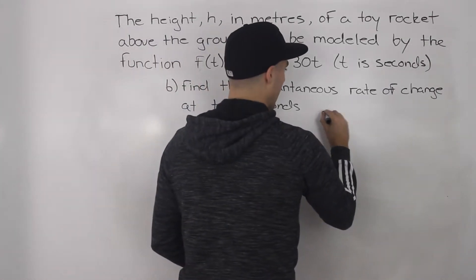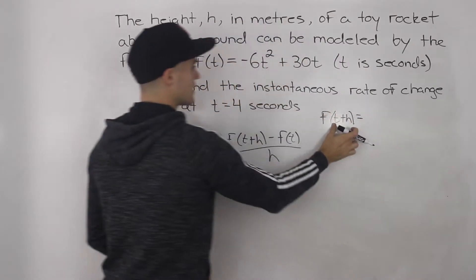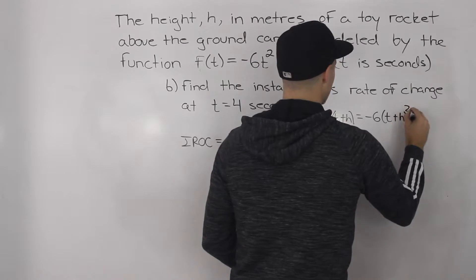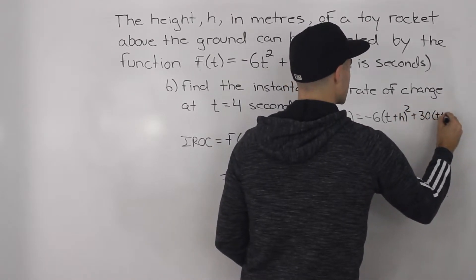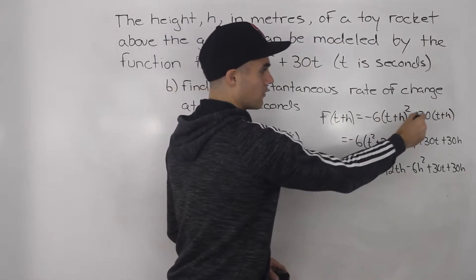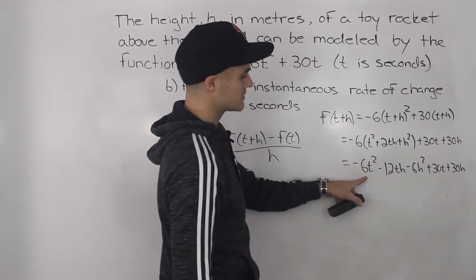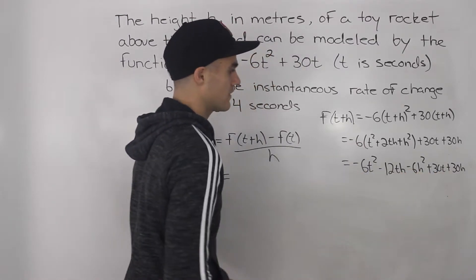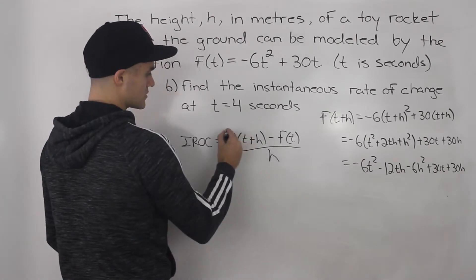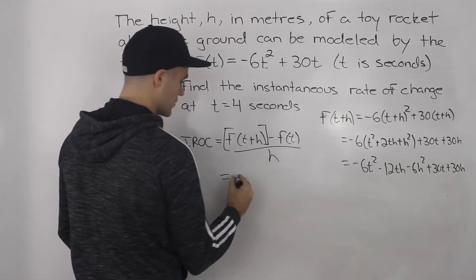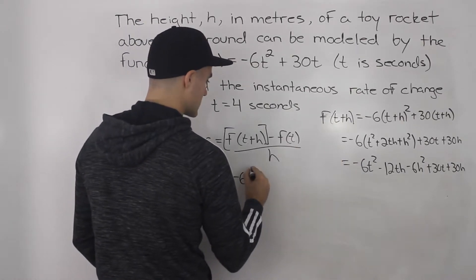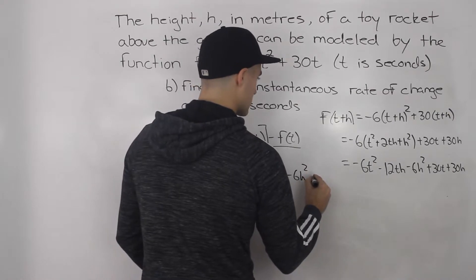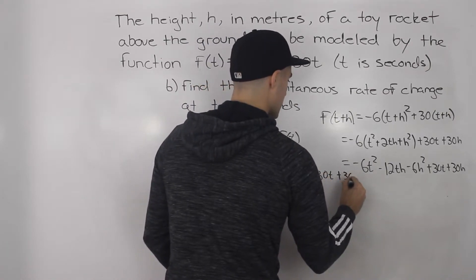First we have to find f(t+h) by plugging in (t+h) for all t values. We get negative six times (t+h)² plus 30 times (t+h). When you expand — foiling out and distributing the 30 — the final expression is: -6t² - 12th - 6h² + 30t + 30h. You can't simplify further because there are no like terms, so f(t+h) equals -6t² - 12th - 6h² + 30t + 30h.